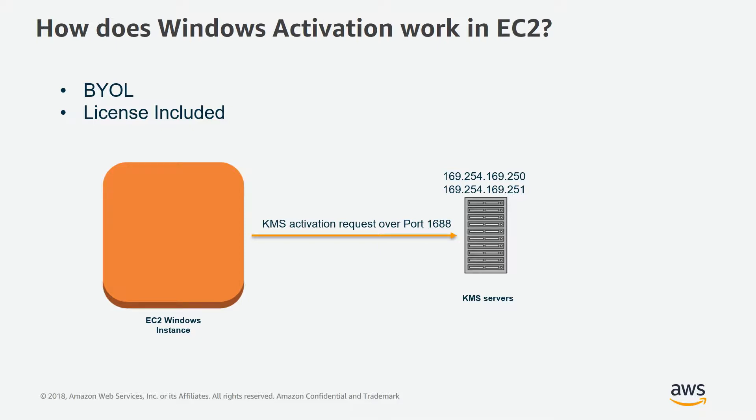Normally, when you launch an EC2 instance, EC2 Config or EC2 Launch configures Windows to point to these KMS servers, and also adds proper routes for the KMS traffic. When Windows requires to renew its KMS activation, it sends the request to these endpoints and it gets activated.